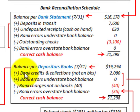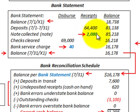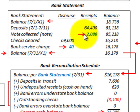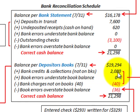We would add back any bank credits or collections not on the books. In this case we have $2,080. That comes off the bank statement — it was for a note collected with interest, where the customer sent their loan payment directly to the bank, and the bank recorded it on the company's behalf. There were receipts of $2,080 total. We add this amount, and there are no book errors that understate the book balance, so we put down zero for that.